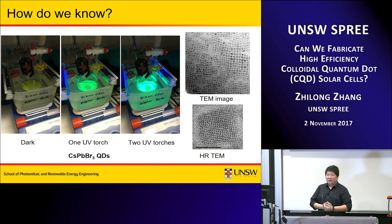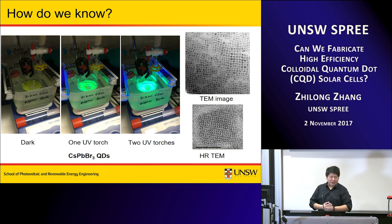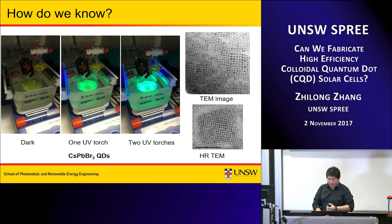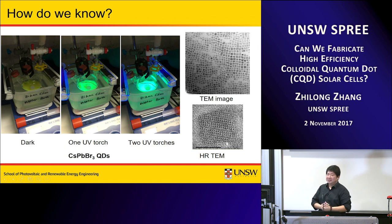How do we know we have made quantum dots? When the precursors are mixed together the solutions typically undergo a color change. Quantum dots usually have very good luminescence properties. For example, cesium lead bromide solution looks yellow in the dark, but under a UV torch you can see green light coming out. Under an electron microscope you can see the particles, and looking closer you can see atomic fringes showing very good crystal quality.